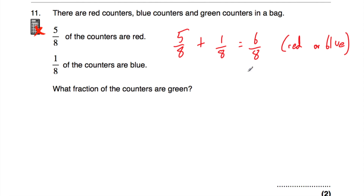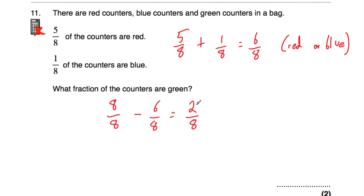Because the bag only contains red, blue, and green counters, the rest must be green. The whole bag is eight eighths, so we do eight eighths take away six eighths, which leaves two eighths. Two eighths can be cancelled — dividing both by two gives one quarter. So a quarter of the counters are green. To recap: five eighths red plus one eighth blue equals six eighths, and eight eighths minus six eighths equals two eighths, which simplifies to one quarter.